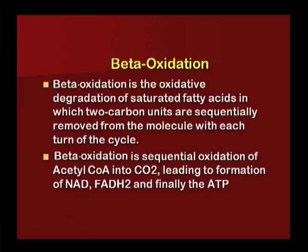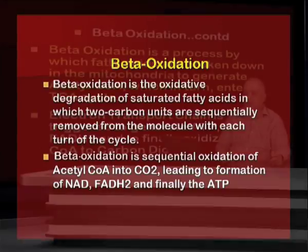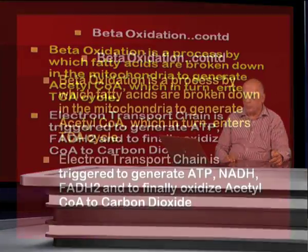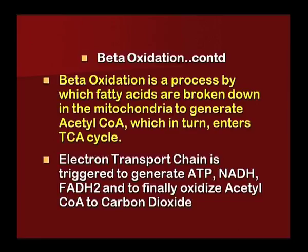Beta oxidation is the oxidative degradation of saturated fatty acids in which two carbon units are sequentially removed from the molecule with each turn of the cycle. It is the sequential oxidation of acetyl coenzyme A into carbon dioxide, leading to formation of NADH, FADH2, and finally ATP. Beta oxidation is a process by which fatty acids are broken down in the mitochondria to generate acetyl coenzyme A, which enters the TCA cycle (Krebs cycle) of respiration. The electron transport chain is triggered to generate ATP, NADH, and FADH2, and finally oxidized acetyl coenzyme A to carbon dioxide.